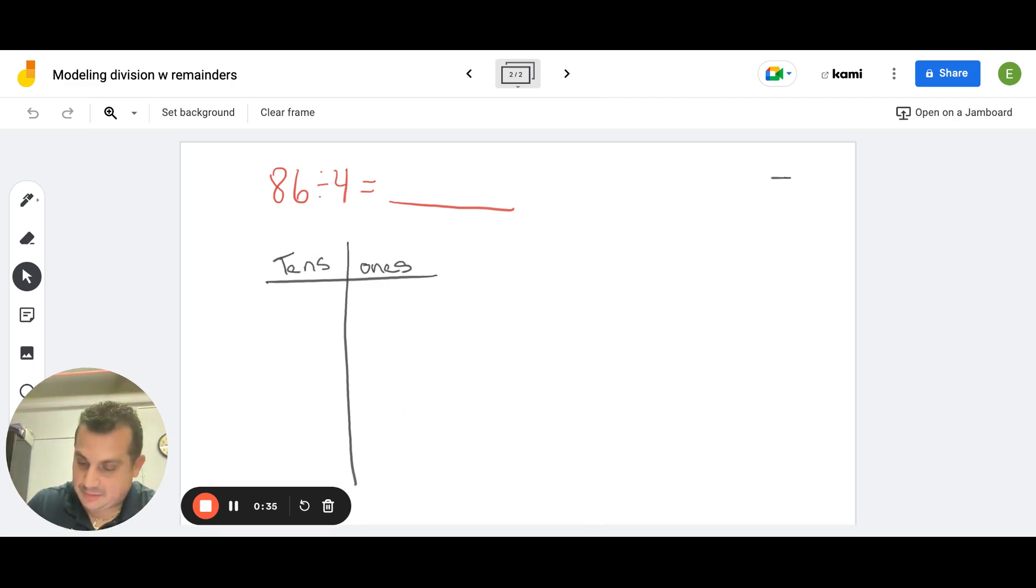So 86. I have to model that 86 into tens and into ones. So you see here I have 8 tens and I have 6 ones. So I'm going to go 1, 2, 3, 4, 5, 6, 7, 8. And then I have 1, 2, 3, 4, 5, 6 ones. There's my 86.